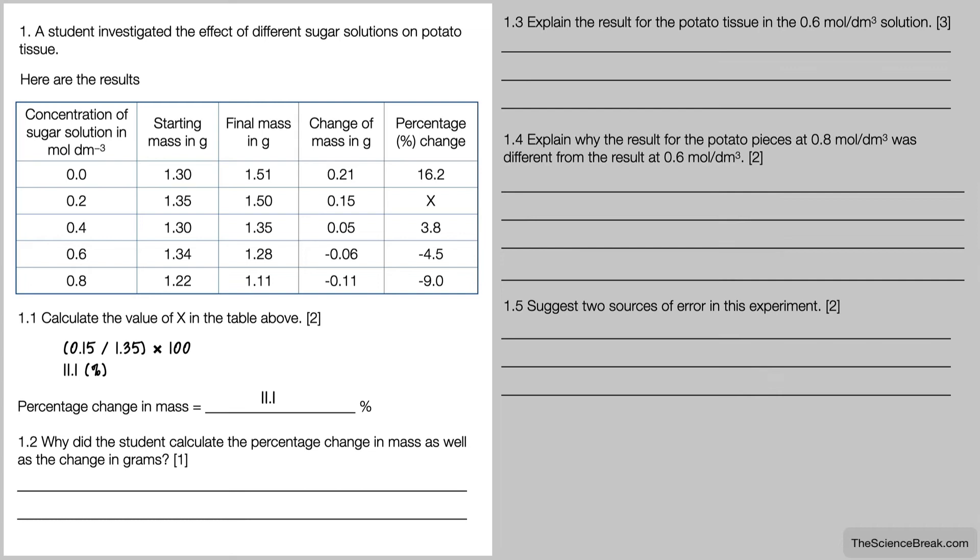Question 1.2: Why did the student calculate the percentage change in mass as well as the change in grams? The answer for that is because the potato tissue has different masses at the start, so the results can be compared if we use a percentage change in mass.